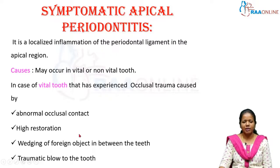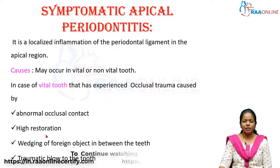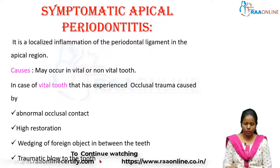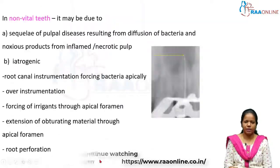Additional causes include wedging a foreign object between the teeth or a traumatic blow to the tooth. Traumatic injuries can also cause symptomatic apical periodontitis.